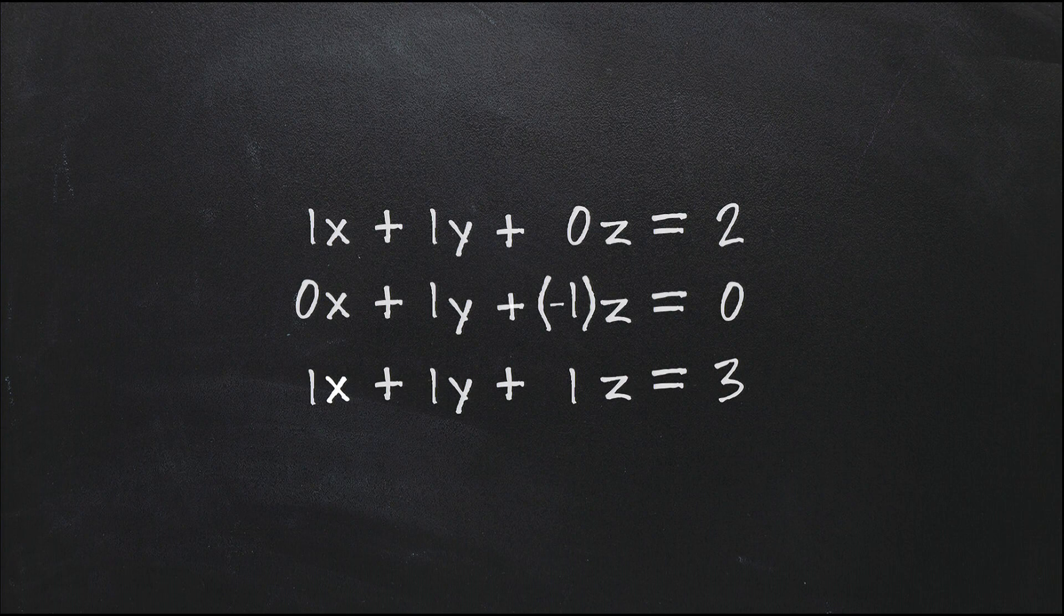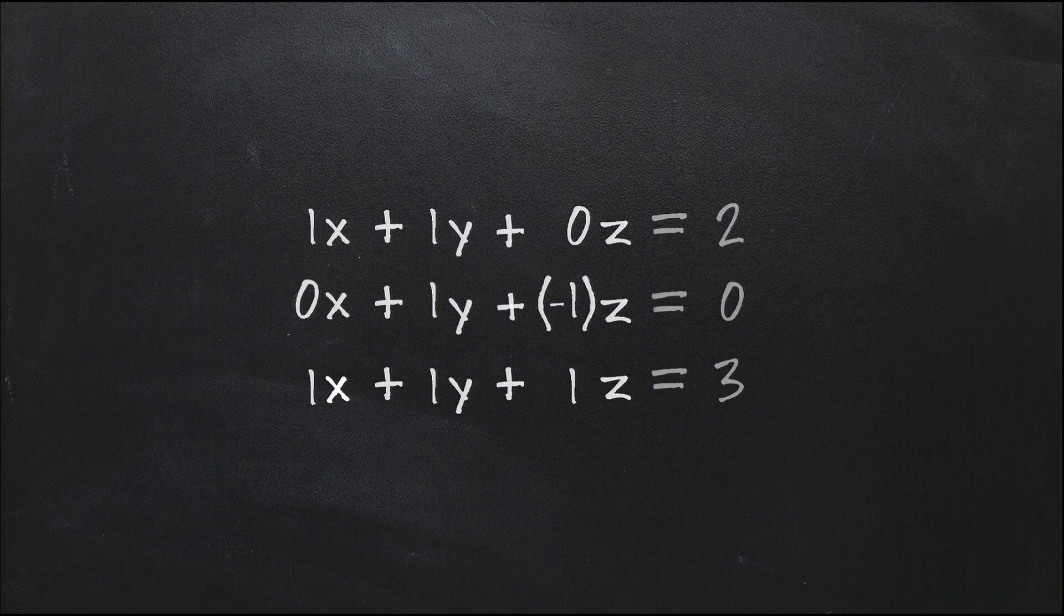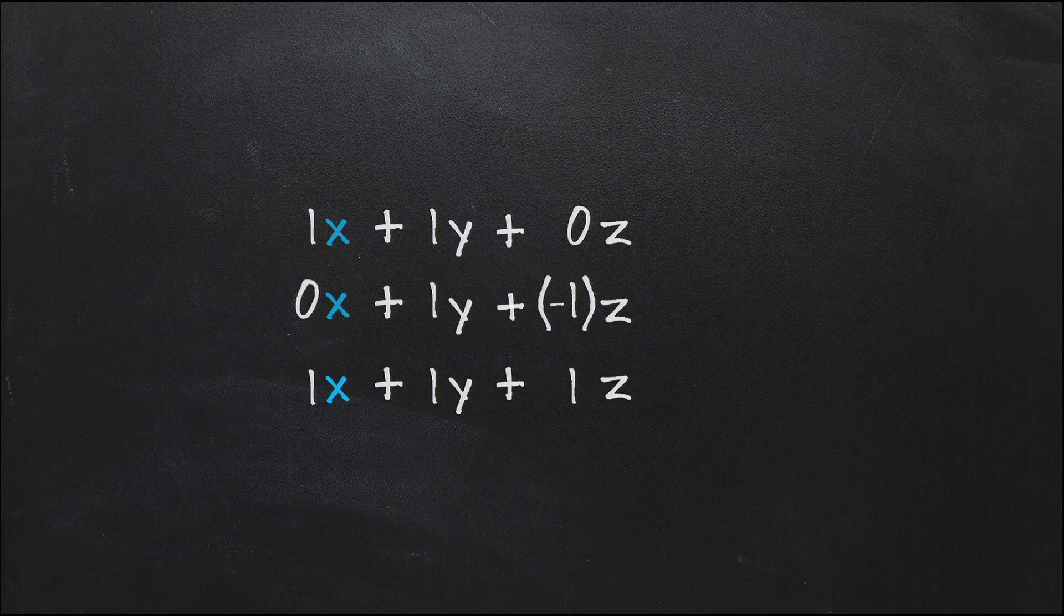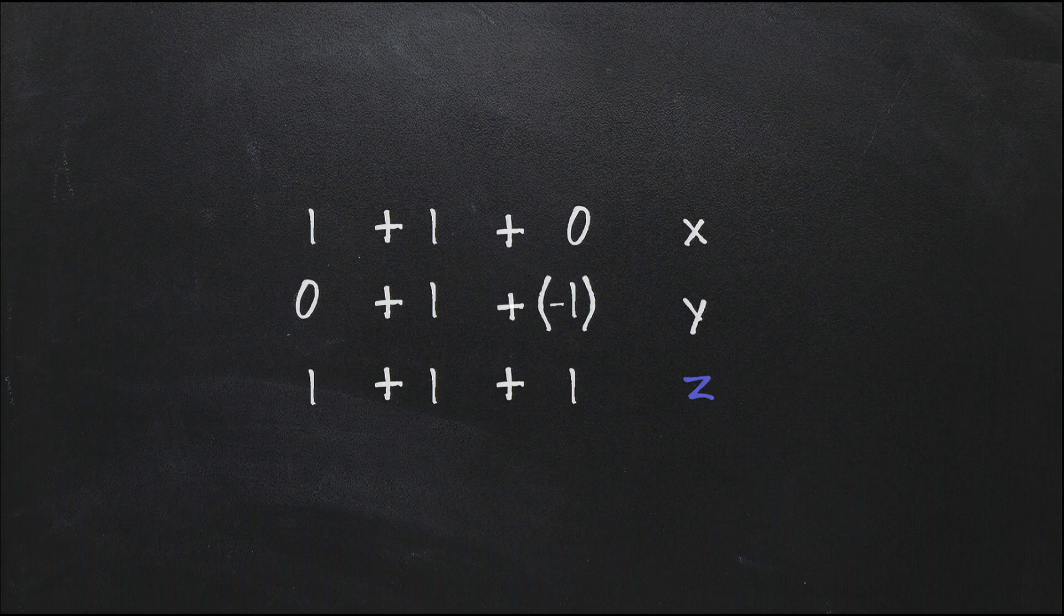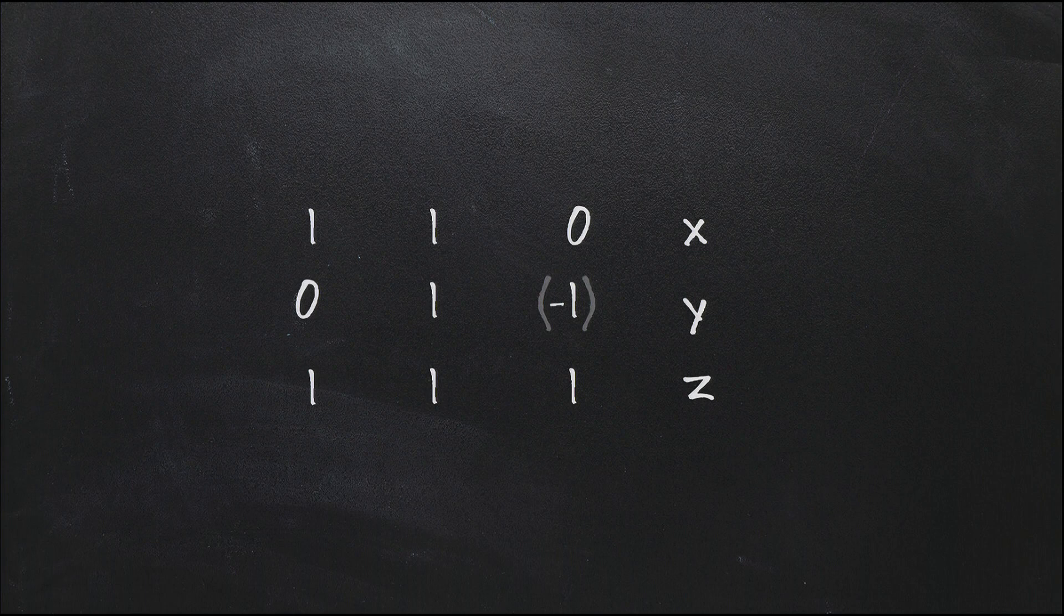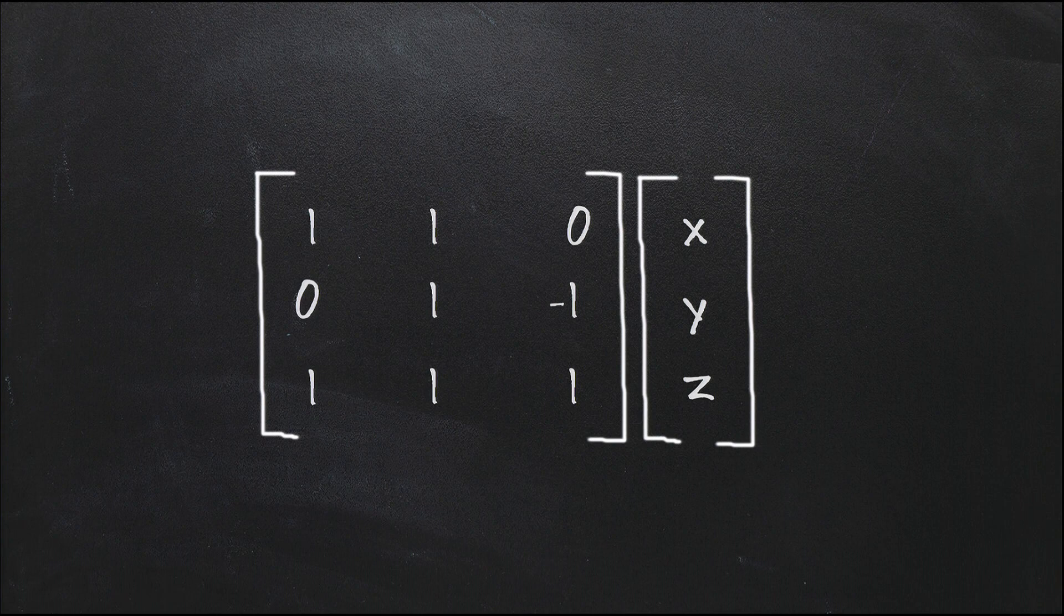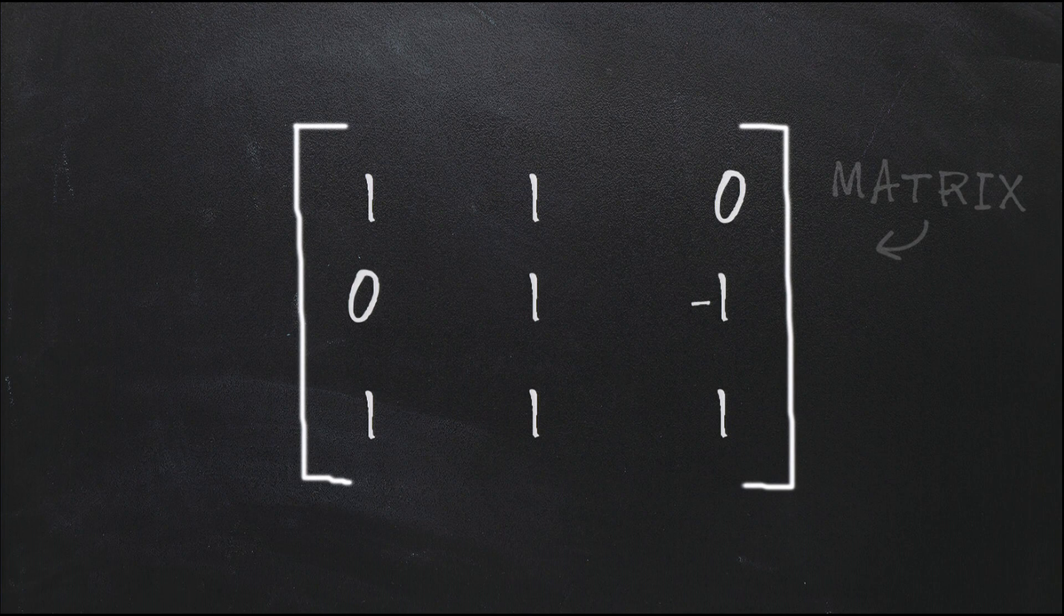We don't have to write X, Y, and Z all the time. We just remember the order in which they occur. And we store these X, Y, and Z in a little skinny table that we call a vector, like this. And then we store these coefficients, the ones and the zeros, and here also the minus one, in a separate table. So now the system of equations that I have is really just a table of coefficients, like this, and then this little vector with all these unknowns.